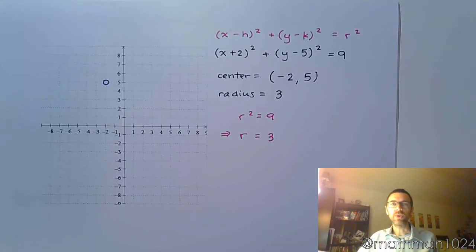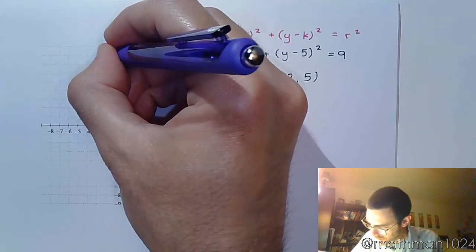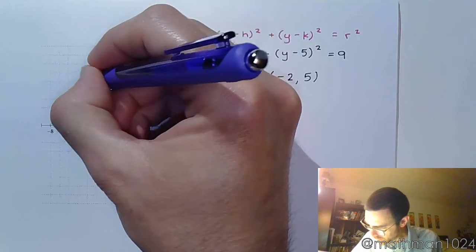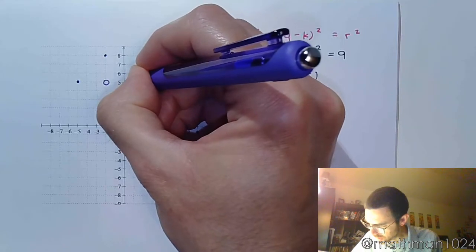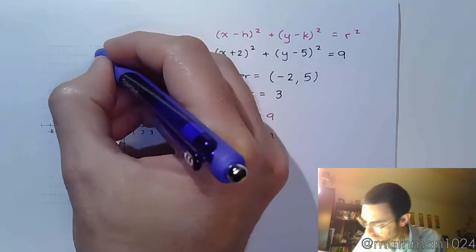And then we do a radius of 3, which means up, down, left, and right, 3 units. So we go up 3, 1, 2, 3, to the left. Down 3, and to the right, 3. And then I draw my circle.